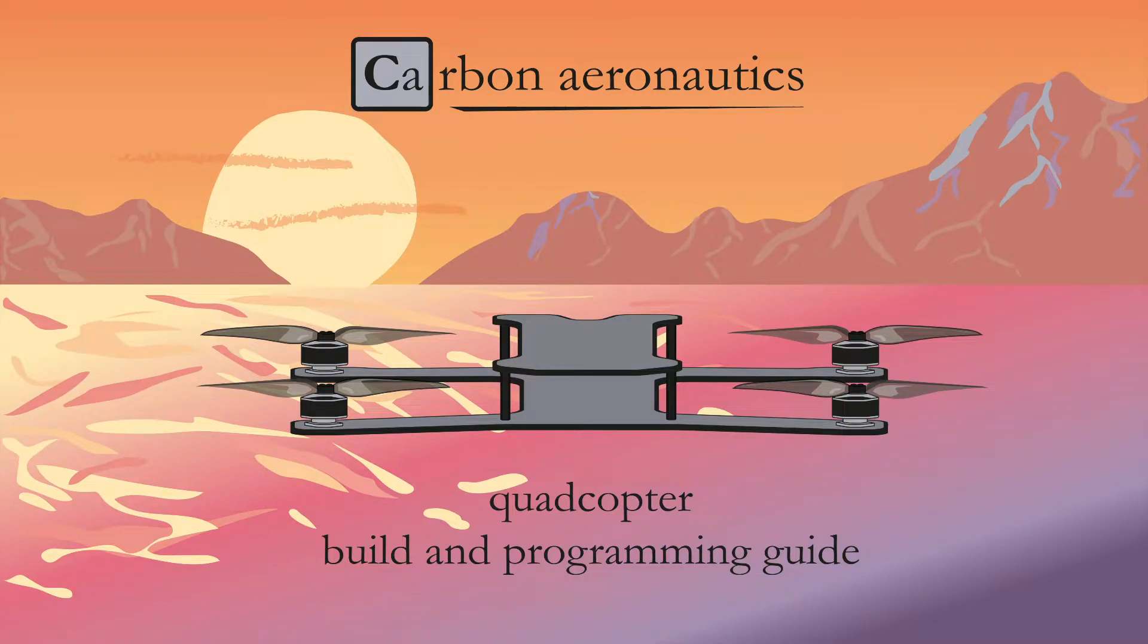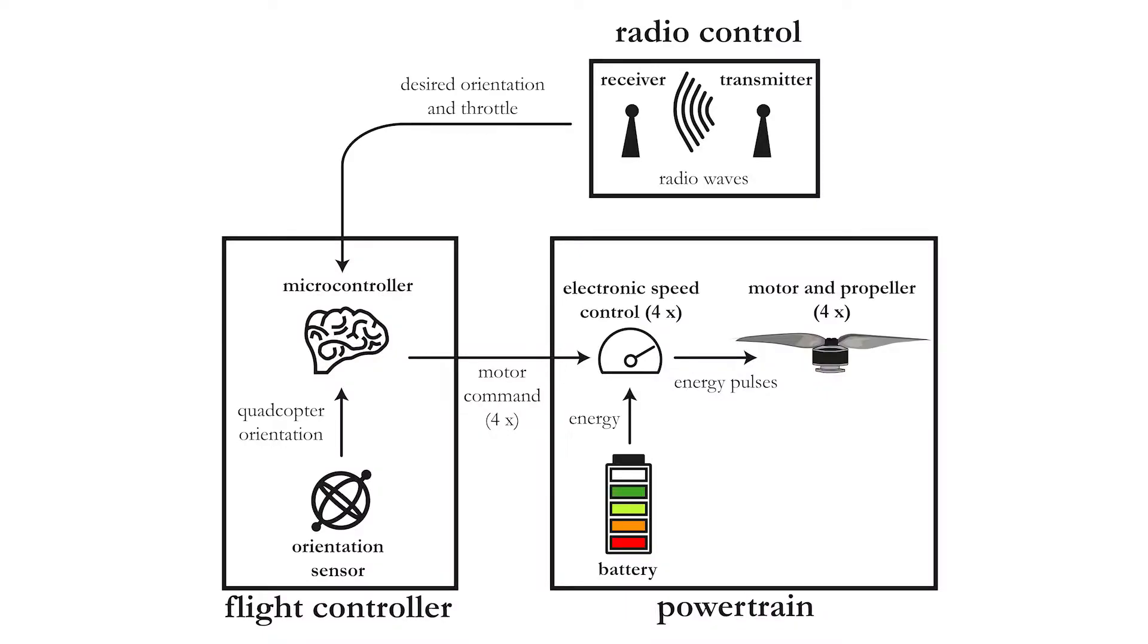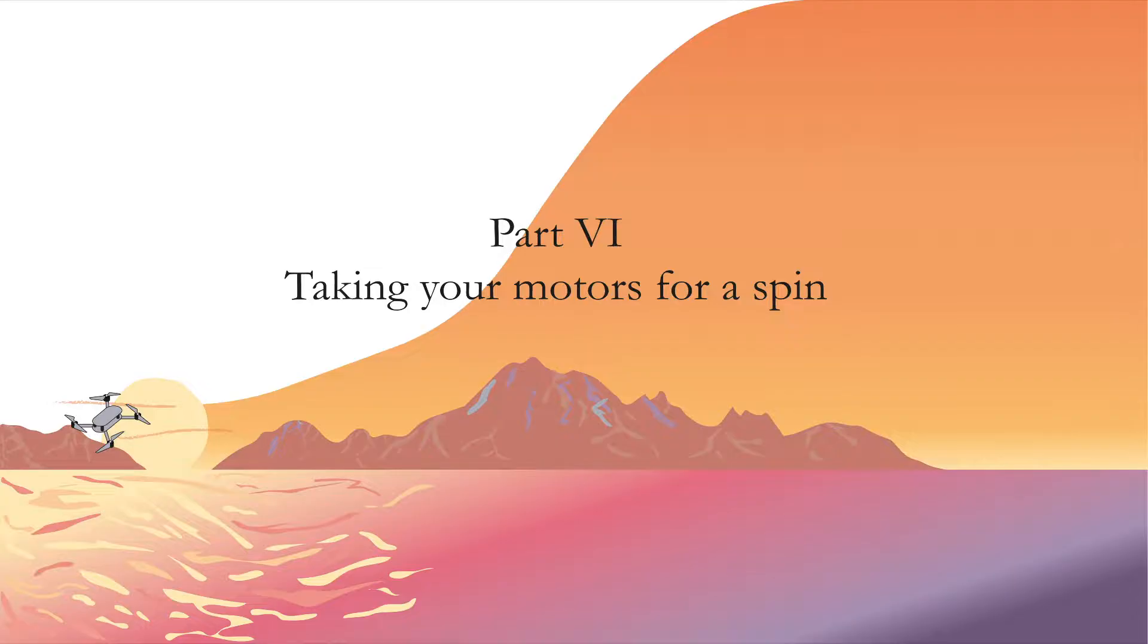Welcome to the sixth video in this series where you are now finally going to fire up the first motor of your quadcopter. In this session you will not have to program anything because we are going to cut out the flight controller and directly connect the receiver to the electronic speed controller or ESC. This way you will be able to directly control the motor from a receiver channel.